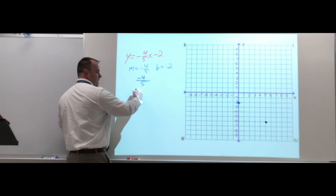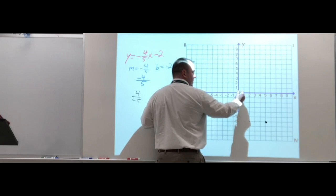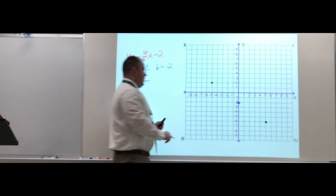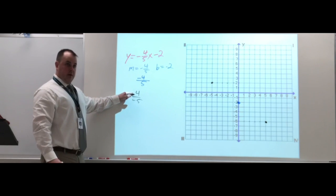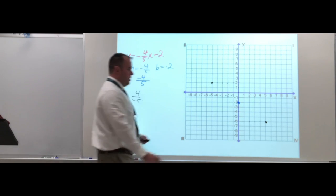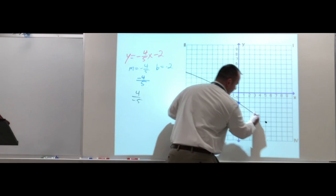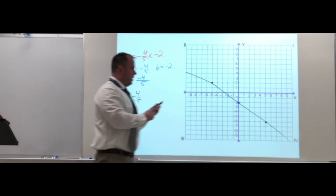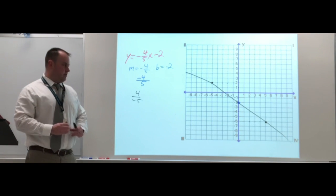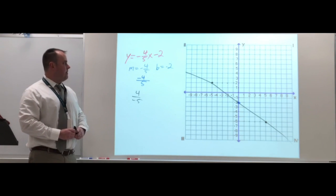You could also do positive 4 over negative 5 — go up 4 and left 5 — and you end up on the same line. That gives us three points, and it's still a straight line. Draw the line through those points and there is our graph for y = (-4/5)x - 2.